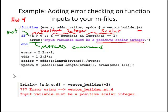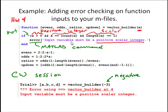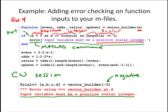We can see an example command window session using this function. Here's a negative value — plugging in that negative value causes the logical test to evaluate as false, which the not operator changes to true, which makes the if block execute and output the error. The error text reads: 'Input variable must be a positive scalar integer.' This is a common practice to put error checking on your inputs to make sure they're in the required range for your function.